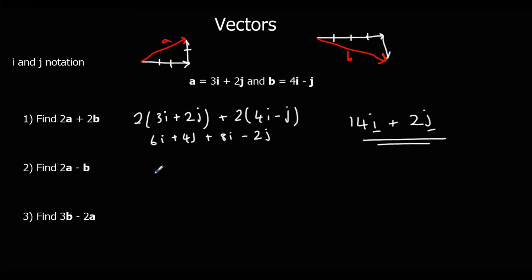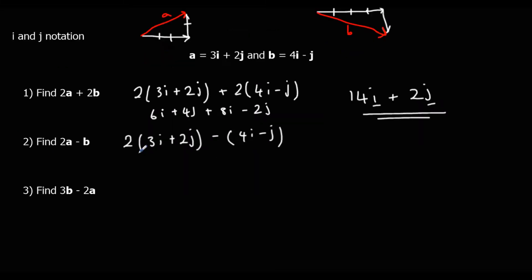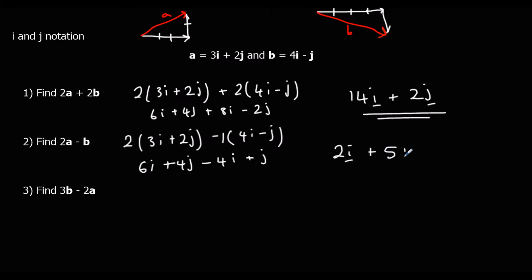How about 2a minus b? So that's 2 lots of (3i plus 2j), minus (4i minus j), which gives 6i plus 4j, minus 4i, and plus j — which gives us 2i plus 5j.